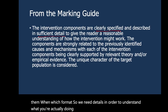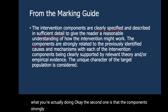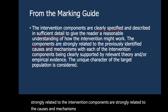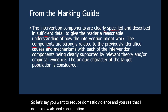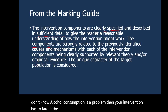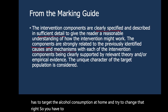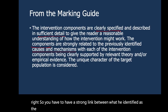The second one is that the components are strongly related — the intervention components are strongly related to the causes and mechanisms. So let's say you want to reduce domestic violence and you see that alcohol consumption is a problem. Then your intervention has to target the alcohol consumption at home and try to change that. You have to have a strong link between what you identified as the cause and what you're trying to change.